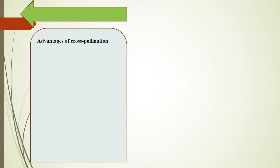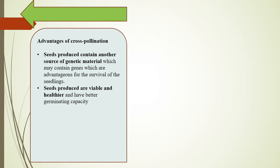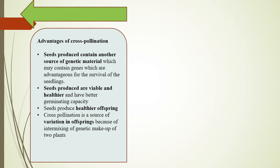Advantages of cross-pollination: Seeds produced contain another source of genetic material which may contain genes advantageous for the survival of the seedlings. The seeds produced are viable and healthier and have better germinating capacity. Seeds produce healthier offspring. Cross-pollination is a source of variation in offspring because of intermixing of the genetic makeup of two plants.